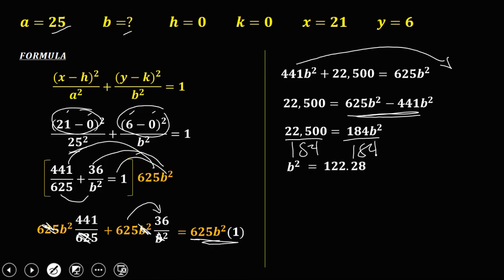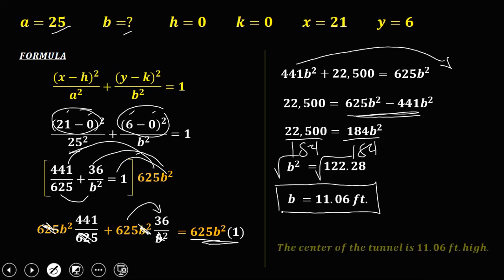To solve for b, just take the square root, so b now is 11.06 feet. So this is the length of the center of the tunnel. Therefore, the center of the tunnel is 11.06 feet high.